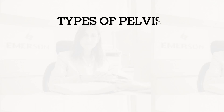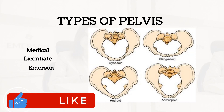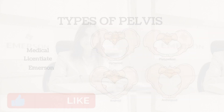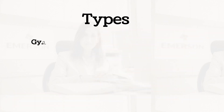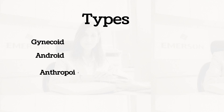Welcome to my channel. Today I'm going to talk about types of pelvis and their characteristics. The types are: gynecoid, android, anthropoid, and platypelloid.